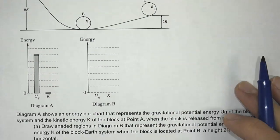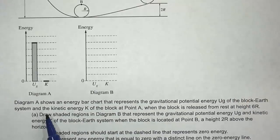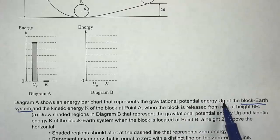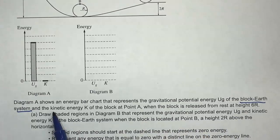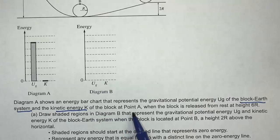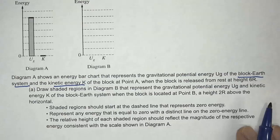The first question says that diagram A shows an energy bar chart that represents the gravitational potential energy Ug of the block-Earth system. That's important because there wouldn't be any gravitational potential energy if the Earth was not part of that system, and the kinetic energy K of the block at point A when the block is released from rest at height 6R.